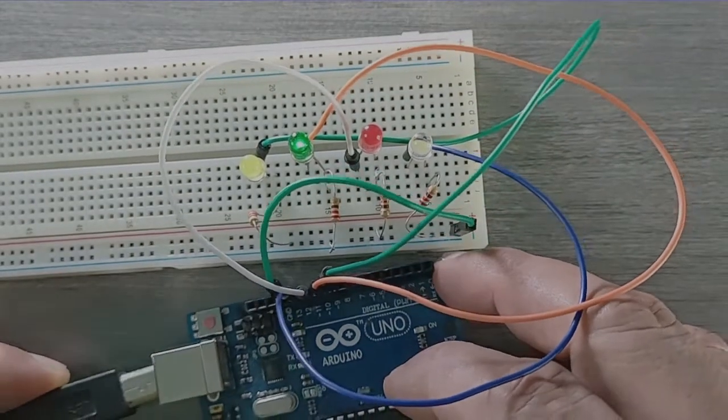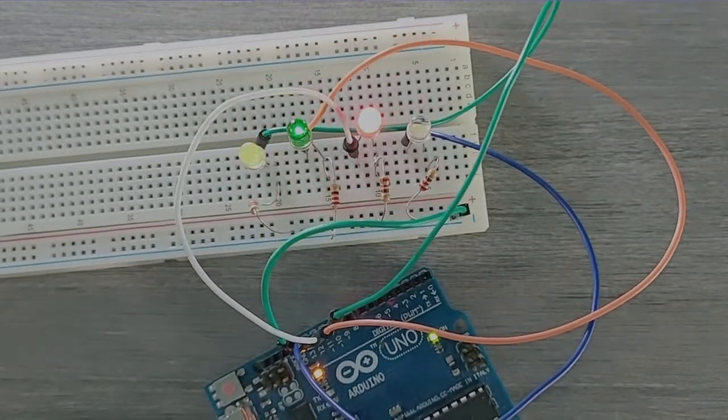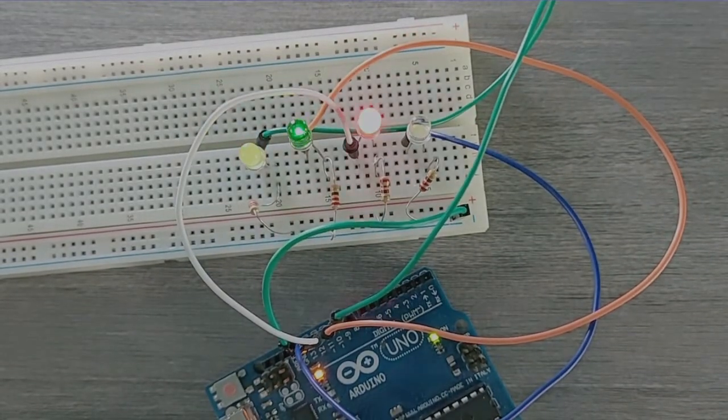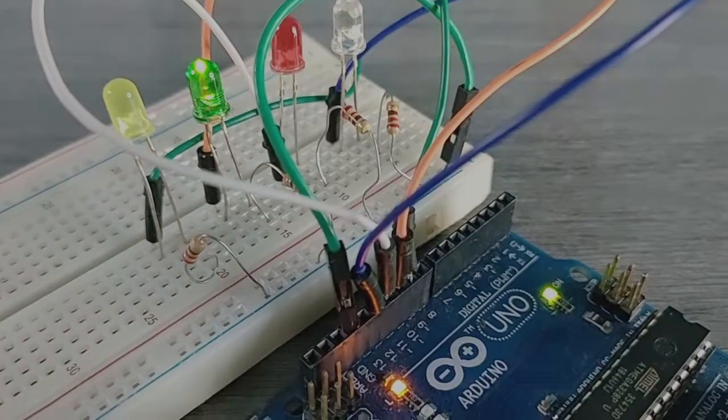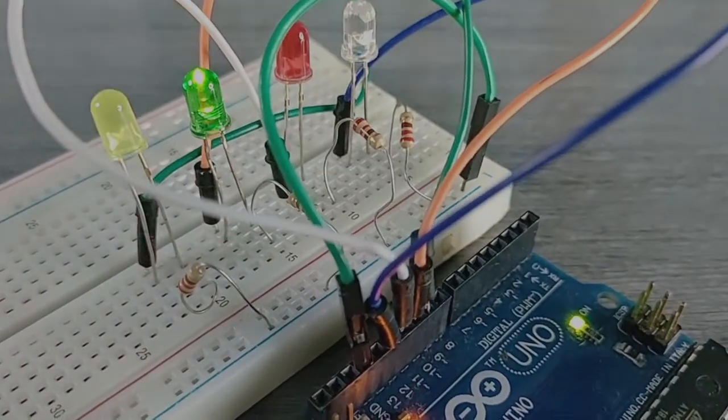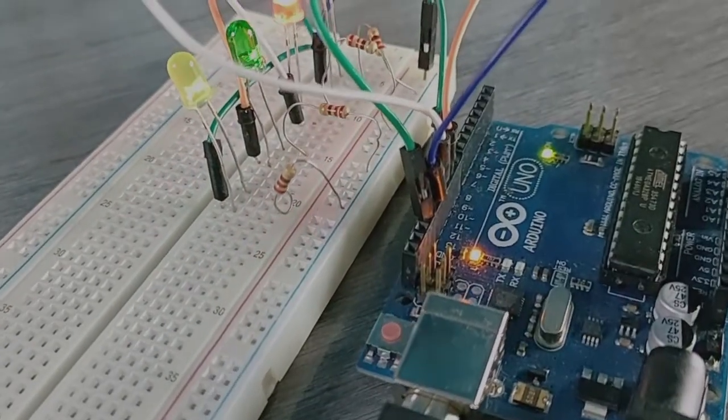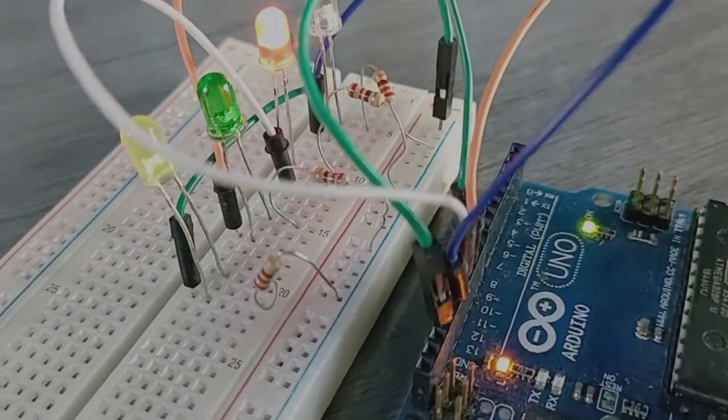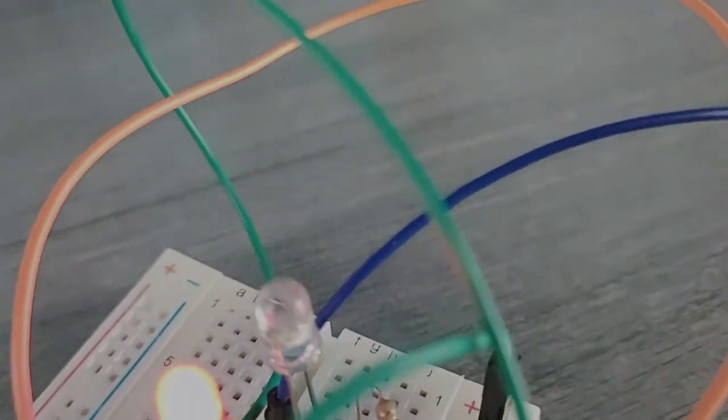The running LED effect or the LED chaser effect is a popular project in Arduino. The blinking pattern produced by this effect is similar to a traffic light system, a volume level indicator, or LED signage of a store. To produce this effect, you need to connect more than one LED to your Arduino board.